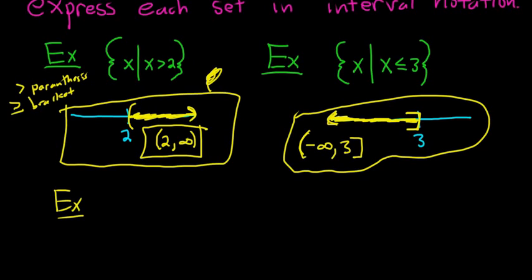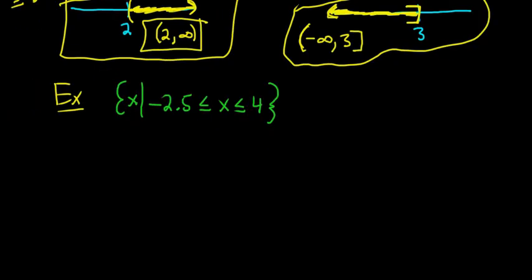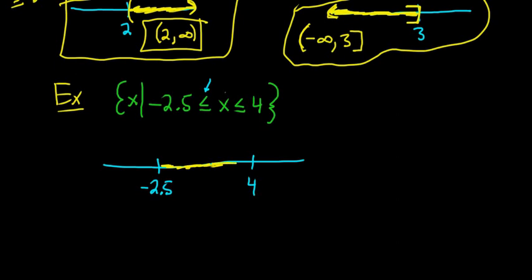Let's do another one — something a little bit harder. The set of all x such that negative 2.5 is less than or equal to x, which is less than or equal to 4. Drawing the number line, negative 2.5 is here and 4 is here. Reading it, x is greater than or equal to negative 2.5 and also less than or equal to 4 — so x is between these numbers. Whenever you see this, think "between."